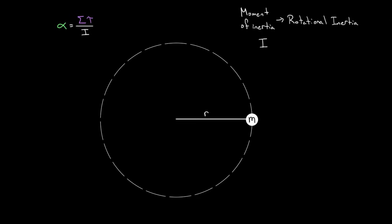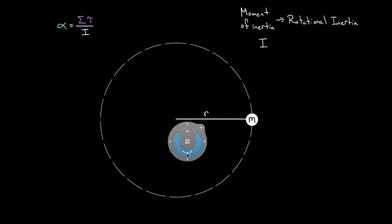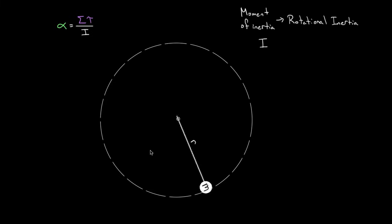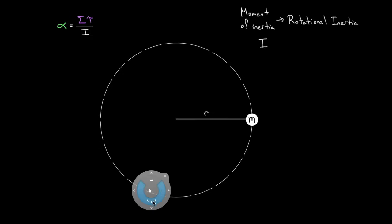It serves the same role that mass did — as the inertia term for angular acceleration. We figured out how to determine the moment of inertia for a point mass. By point mass, I just mean a mass you could treat as if all the mass were rotating at the same distance from the axis. If you've got a heavy ball on a very light string, you can neglect the string mass. The moment of inertia of a point mass is just the mass times how far that mass is from the axis squared — MR squared.